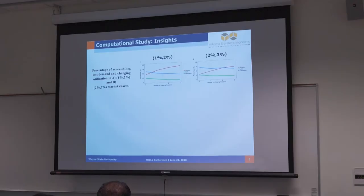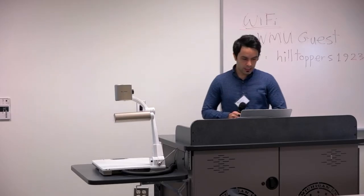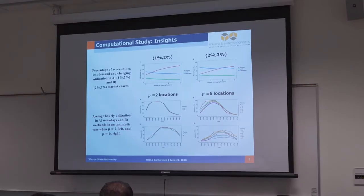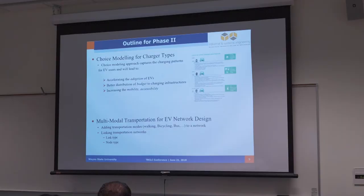Here are some results from Phase 1. As you can see, the percentage of accessibility, lost demand, and charging utilization in both conservative and optimistic cases. Also, you can see the average hourly utilization in weekdays and weekends for P equals 2 and P equals 6. P equals 2 means we want to install in two locations out of 32 locations.